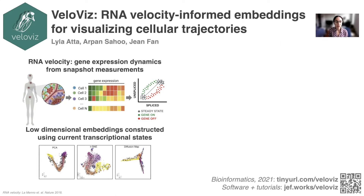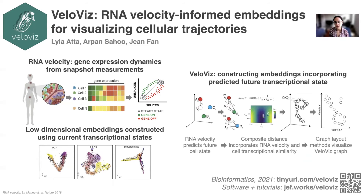These methods, however, only consider cells' current transcriptional states and can yield very different representations of single-cell transcriptomics data. So we asked if we can incorporate future transcriptional states predicted by RNA velocity to generate more reliable and informative embeddings for single-cell transcriptomics data. To do this, we construct a composite distance that combines RNA velocity and Euclidean distance, and we use it to construct a graph representing the single-cell data. This graph can then be input into graph layout approaches, such as force-directed layout or UMAP.